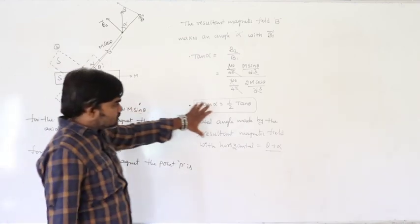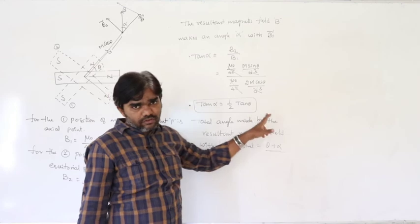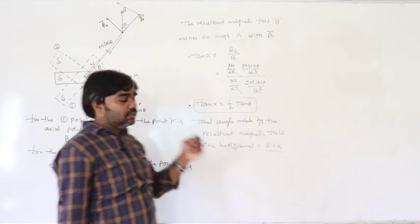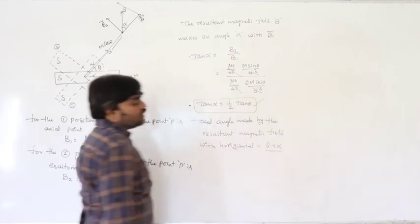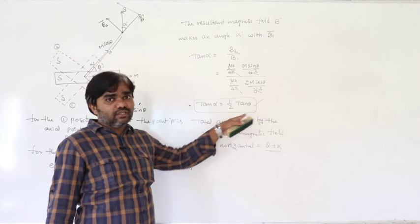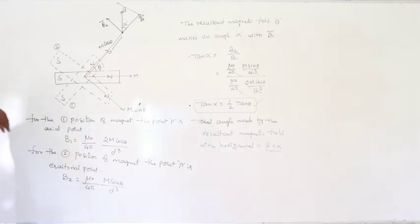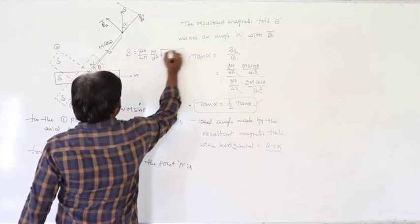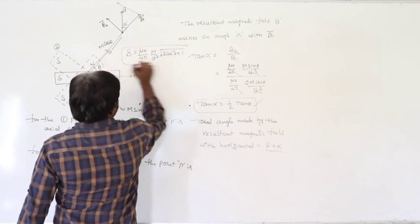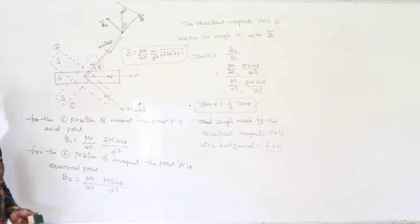The total angle made by the resultant magnetic field with the horizontal is θ + α. This is the same result as in electrostatics for the electric dipole. To summarize: the resultant magnetic field at any position is B = μ₀/4π × M/d³ × √(3cos²θ + 1), and the relation between the angles is tan α = ½ tanθ.